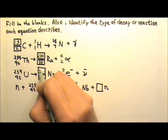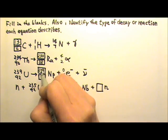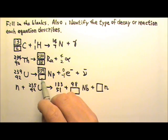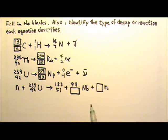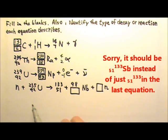239 equals this plus 0, so this must be 239. 92 equals that plus negative 1, so it must be 93 over here. And then this here for the neutron.